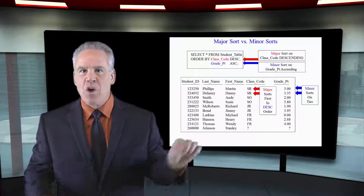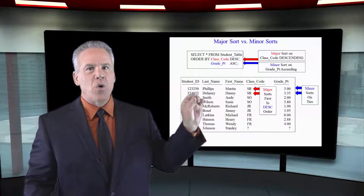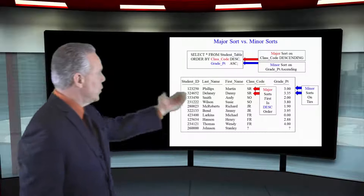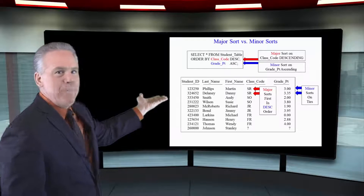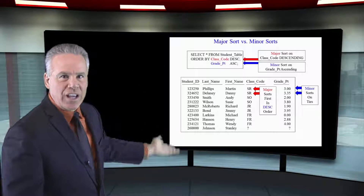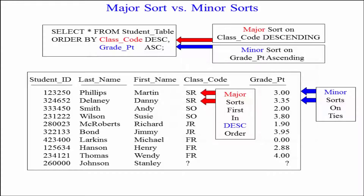Never two ORDER BY statements — one ORDER BY statement. We're going to order by class code descending, comma, and then we'll have a minor sort on grade point ascending. It's going to sort first by the major sort, which is class code descending. So you'll have the seniors at the top, then the sophomores, then the juniors, and then the freshmen, because it's alphabetic in reverse order.